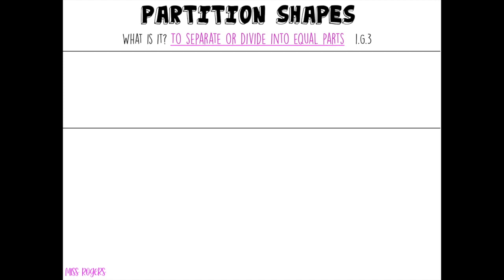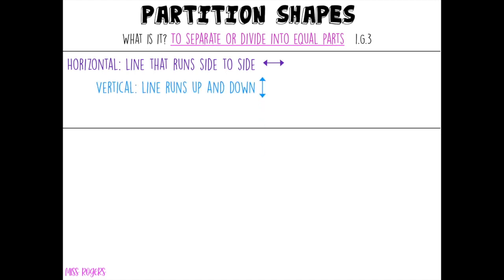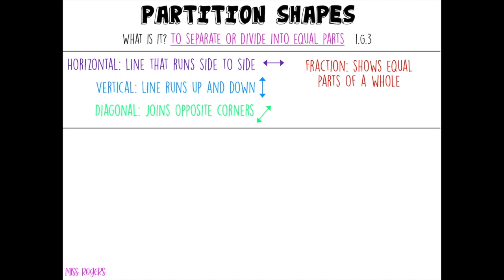The first word is horizontal, and that is a line that runs from side to side. Next is vertical, and that's a line that runs up and down. Then you have diagonal, which is a line that joins opposite corners. Next we have a fraction, which shows equal parts of a whole. And last but not least, we have the word equal, that means that it is the same in size.